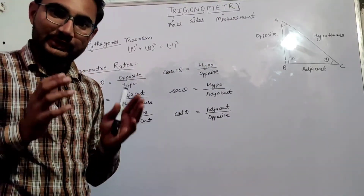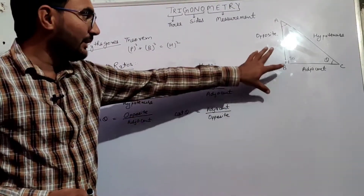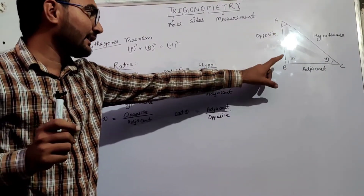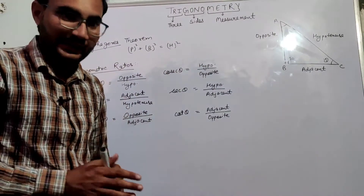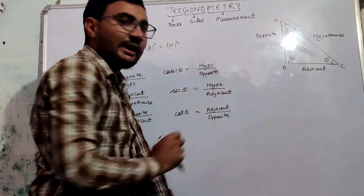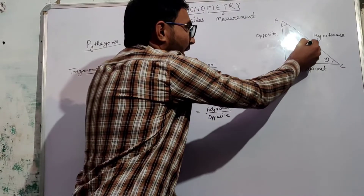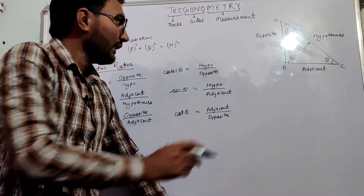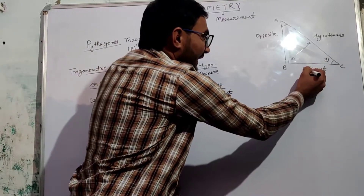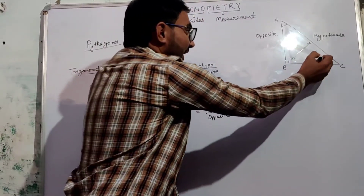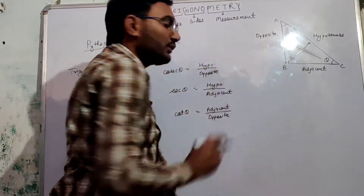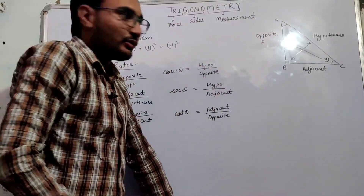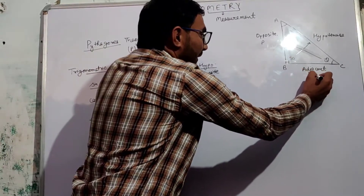The triangle which we will use in Trigonometry will be a right angle triangle, which means one angle in that triangle will be 90 degrees. We know that the opposite side to 90 degrees is always known as hypotenuse, so this side will be hypotenuse. If we take this angle as theta, then the side opposite to theta will be our perpendicular, and the adjacent side to theta will be our base.